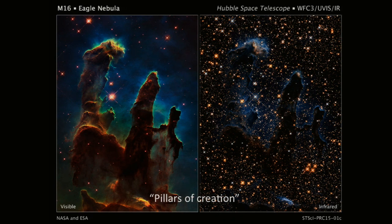This is the Hubble Space Telescope image in the visible. And here's a new image taken very recently in the infrared — the same piece of the sky. You can see right away that they look very, very different. In the left panel, you have big pillars of dust, and in this dust, young stars are forming. This is the place where new stars are being created.